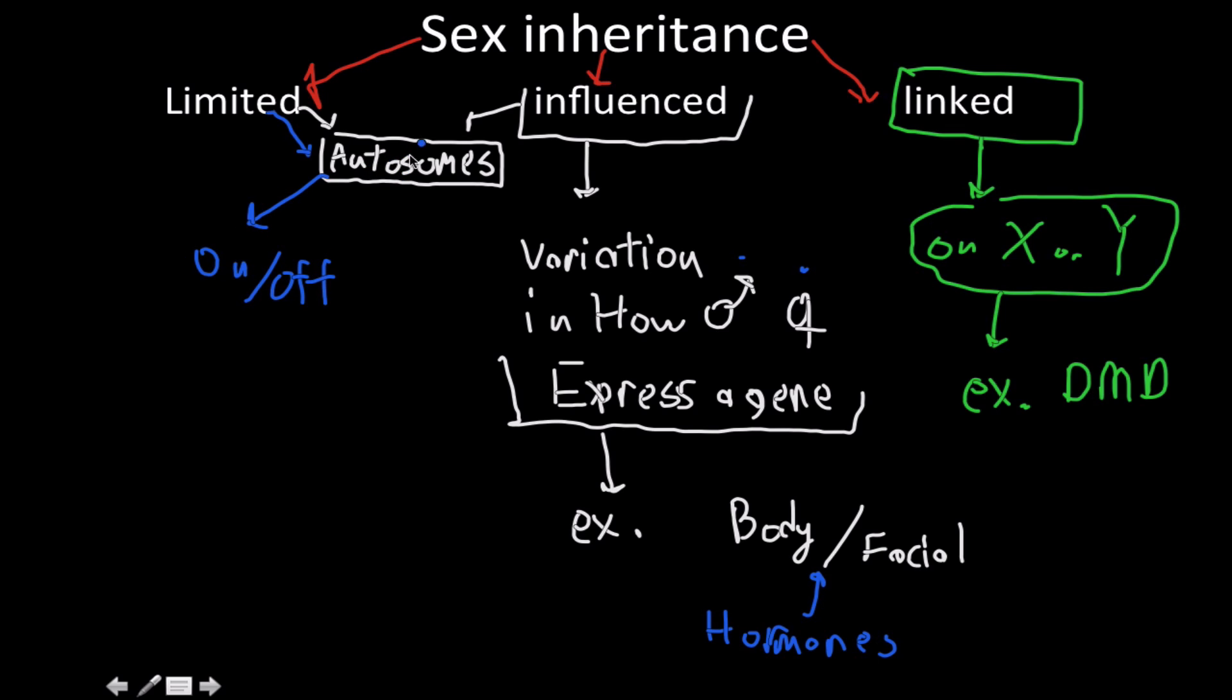For example, it's located on an autosome, so both males and females have these traits. But it is only expressed, it's only on, but in this context it's the same thing as saying expressed. On in one sex.